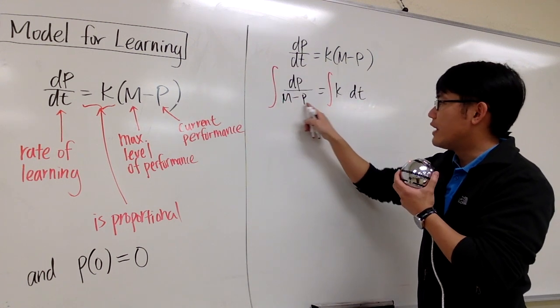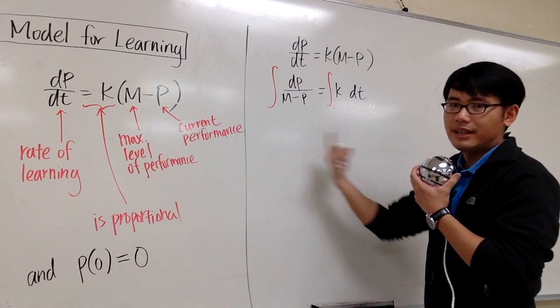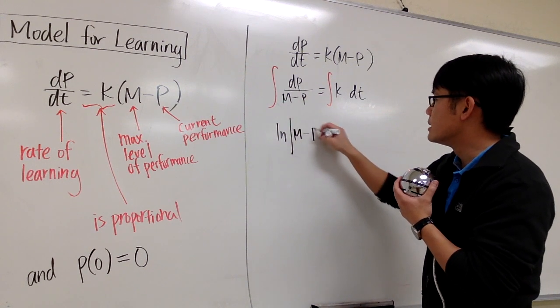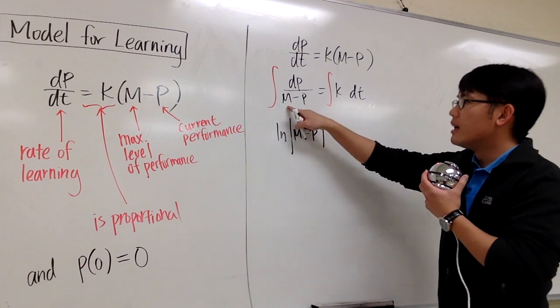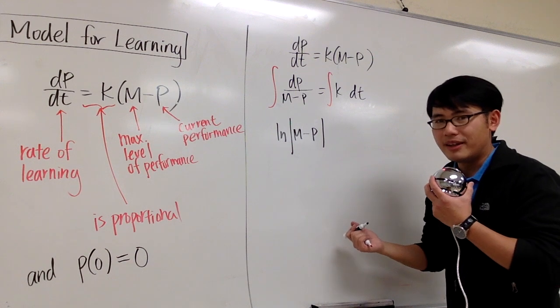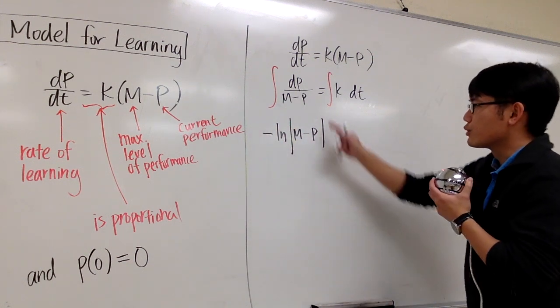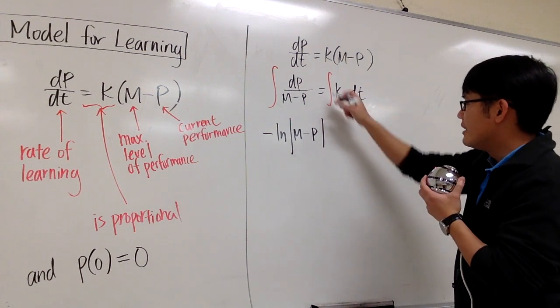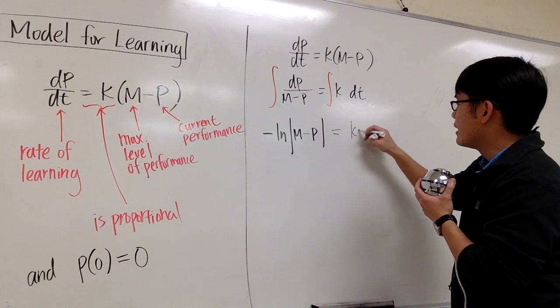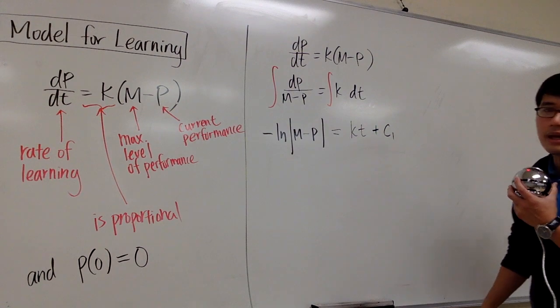Notice that we have a linear factor on the denominator, so this is the linear factor in terms of p in the denominator. The anti-derivative of this is just going to be ln absolute value m minus p, but then the derivative of m minus p is negative 1. We will have to divide it by negative 1, so we need a negative right here. You can also do u-sub, but this is going to be the result. And this is equal to integral of k in the t world is kt, and then we have to have a constant, so that's my first constant, I'll call that c1.